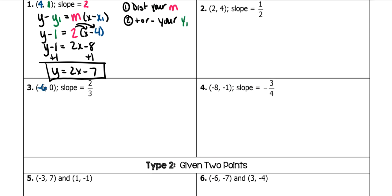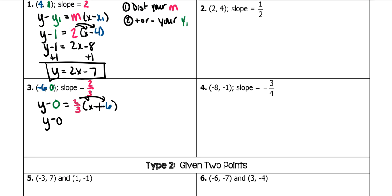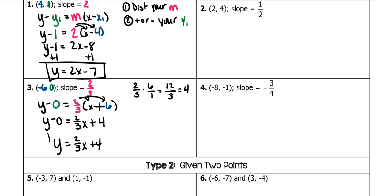Our next example uses the point (-6, 0) with slope 2/3. When I plug it in, I have Y1, slope, and X1. Distribute: Y minus 0 equals 2/3 X plus 2/3 times 6. Whole numbers are always over 1, so 2 times 6 is 12, and 12 divided by 3 is 4. Since Y minus 0 is just Y, our equation is Y equals 2/3 X plus 4.